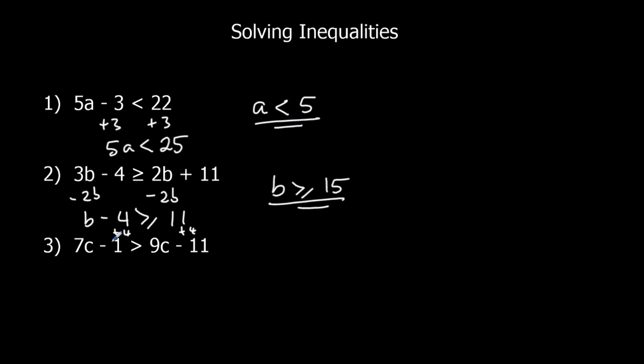Here I'm going to get rid of the smallest c first. That's 7c. So minus 7c from both sides. That gives me minus 1 is bigger than 2c minus 11. We're going to plus 11 to both sides to get the c's by themselves. So 10 is bigger than 2c. And divide both sides by 2. So 5 is bigger than c.